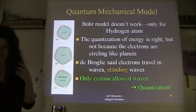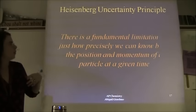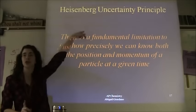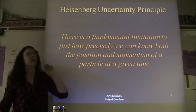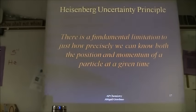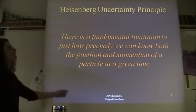The Heisenberg Uncertainty Principle should be familiar from Chem 1. Basically, it says we are certain that we don't know exactly what electrons are doing. We are certain that we are uncertain.